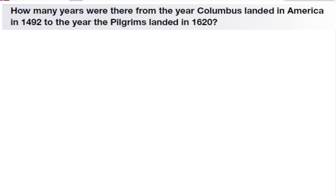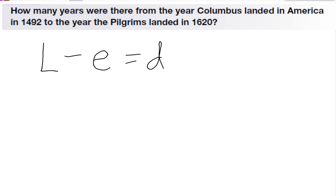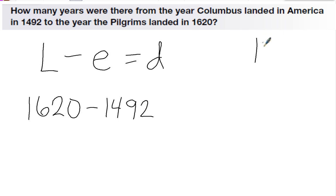Another type of subtraction problem is called elapsed time — when we're trying to figure out how much time has passed. To solve this, it's a subtraction problem: the later year minus the earlier year equals the difference. This question asks how many years were there from the year Columbus landed in America in 1492 to the year the Pilgrims landed in 1620. So the later year is 1620 minus the earlier year, 1492.